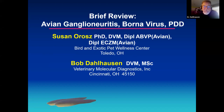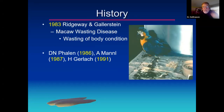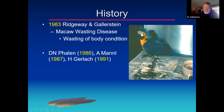Susan and I are going to give a brief review of avian bornavirus, ganglioneuritis, or PDD. We'll probably cover some ground covered before, but there's new material here too. We know back in the early to mid-eighties there were a number of reports both in the US and in Europe about this wasting disease. It was first diagnosed in macaw species — Susan, I think this is one of the first birds reported by Dr. Ridgway Gallerstein out in San Diego. I took this photograph of this bird.